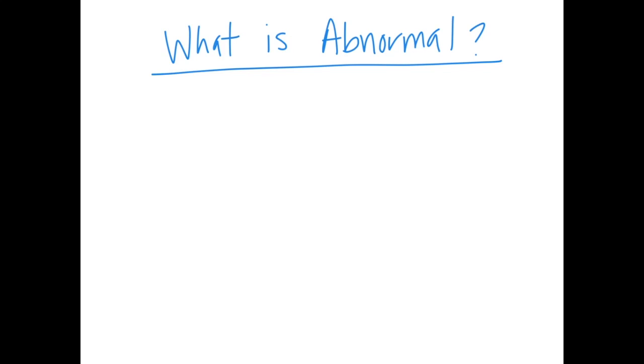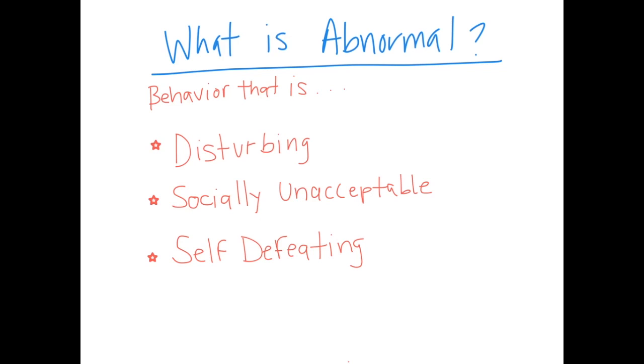So flipping that coin, what is abnormal? Abnormal is behavior that is disturbing, meaning when we see it happening, it makes the viewer uncomfortable. Abnormal behavior is also behavior that is socially unacceptable, meaning it doesn't fit those unwritten rules that we've established as a society. And finally, abnormal behavior is self-defeating or self-limiting. It interferes with an individual's day-to-day function.